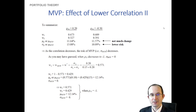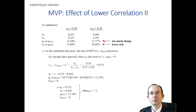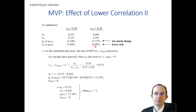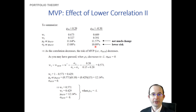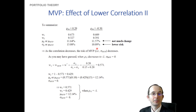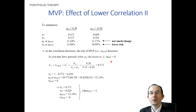To summarize: if two assets are positively correlated, we can still see a risk reduction, but not a great one. If they are negatively correlated, portfolio returns don't change much but there is a substantial risk reduction. We can extrapolate that the lower the correlation, the greater the diversification benefit and the lower the minimum variance portfolio standard deviation — and if the correlation were exactly negative one, the standard deviation of the minimum variance portfolio would be zero.